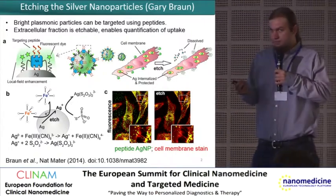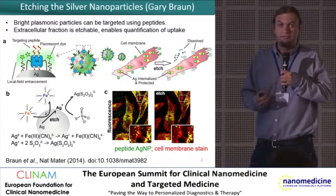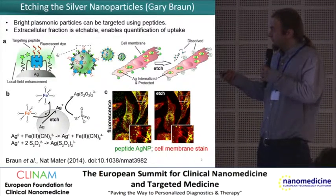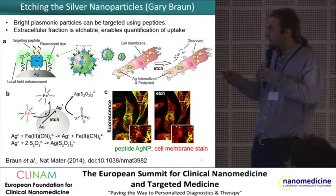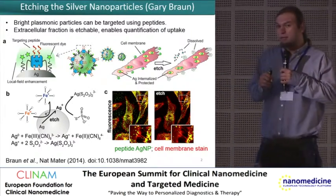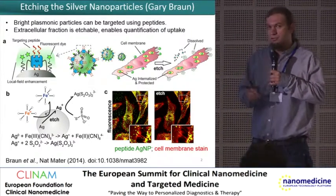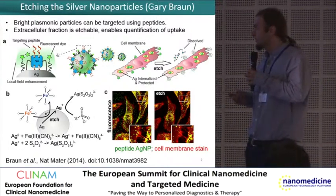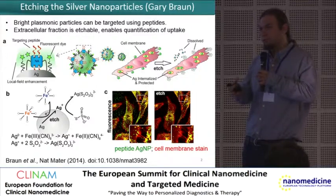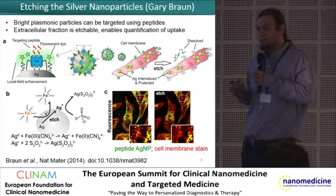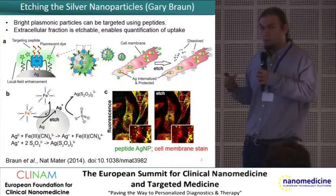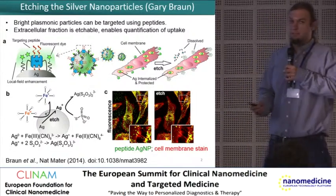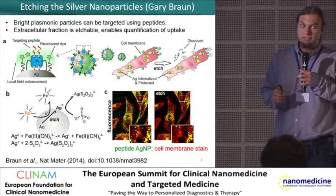This should be an important parameter for development of siRNA delivery vehicles, for example. The chemistry for etching uses a mild redox agent that dissolves the silver core. The dyes fall away from the surface, as well as the peptides — avidity is lost — and everything that's not inside the cells will float away or can be washed away.